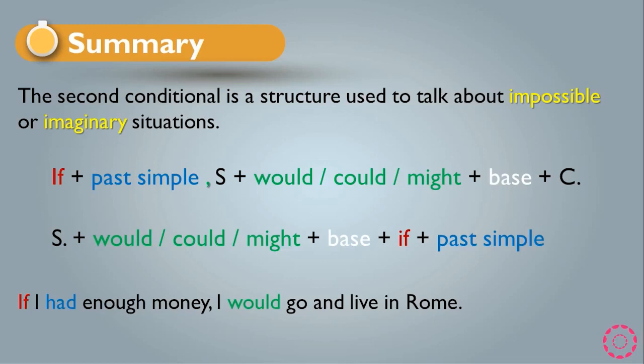Here is another example to clarify: 'If I had enough money, I would go and live in Rome.' This uses the first rule. Using the second rule, the same sentence becomes: 'I would go and live in Rome if I had enough money.' We can switch the positions of the clauses, placing 'if' at the end or in the middle. This is all about the second conditional. I hope you understand very well — thank you very much for listening.